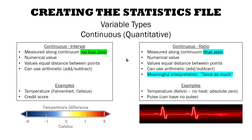We'll first look at continuous variables. A continuous variable is either interval or ratio. An interval variable is measured along a continuum. There is no true zero, and that's the biggest difference between ratio. No true zero would be, for instance, if you look at Celsius — you have one degree, zero degrees, negative one, and it keeps going. So there's no true zero.